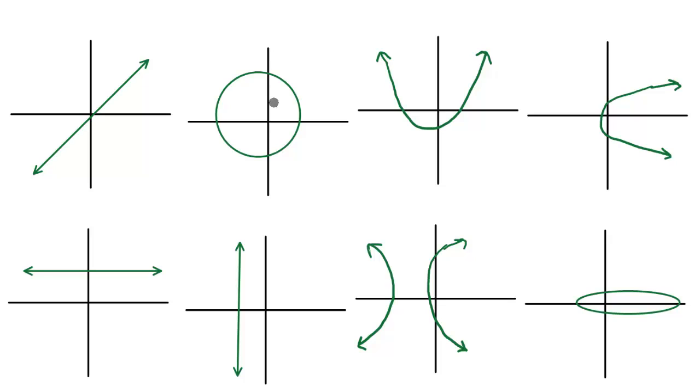Here we have eight different graphs, and we want to determine which ones are functions and which ones are not functions. We're going to use the vertical line test. The reason why the vertical line test works is because every x value can only have one specific y value.